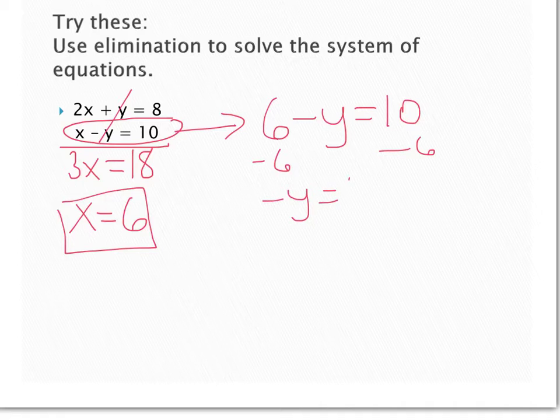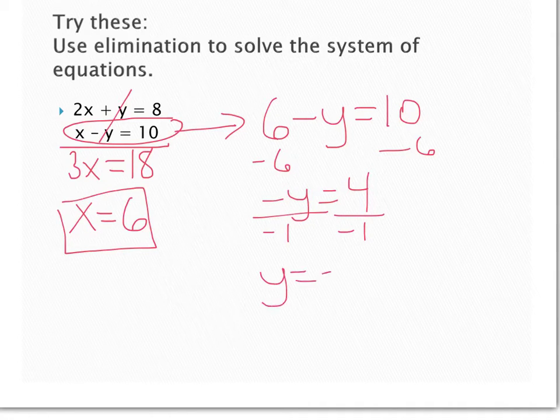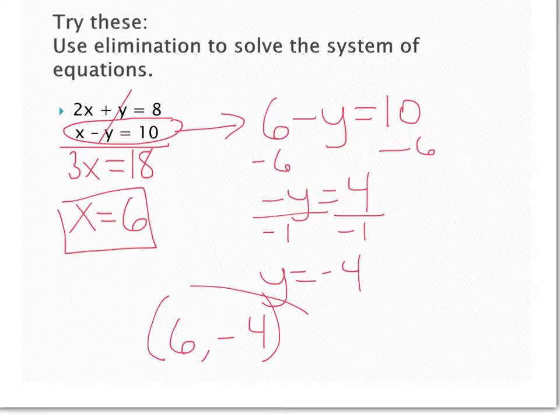Negative y equals 4. 4 divided by a negative 1, or basically just change the sign, and we get y equals negative 4. So my answer will be 6, negative 4. We get that ordered pair. That's how we want to write our answers.